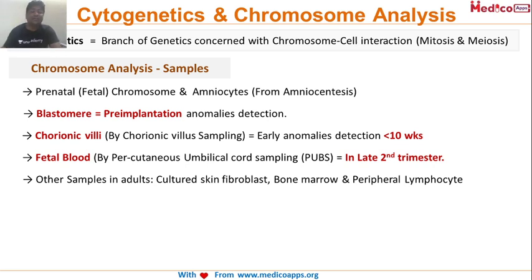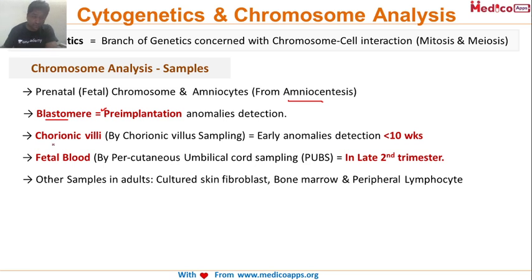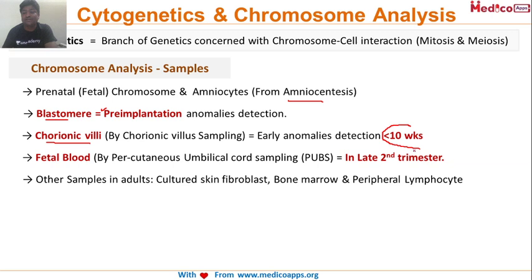A very important and frequently asked topic in cytogenetics is the different types of samples used for chromosomal analysis. Amniocentesis is used for prenatal fetal chromosome analysis. Blastomere is used for pre-implantation anomaly detection. CVS, that is chorionic villus sampling, is used to detect early anomalies — less than 10 weeks.